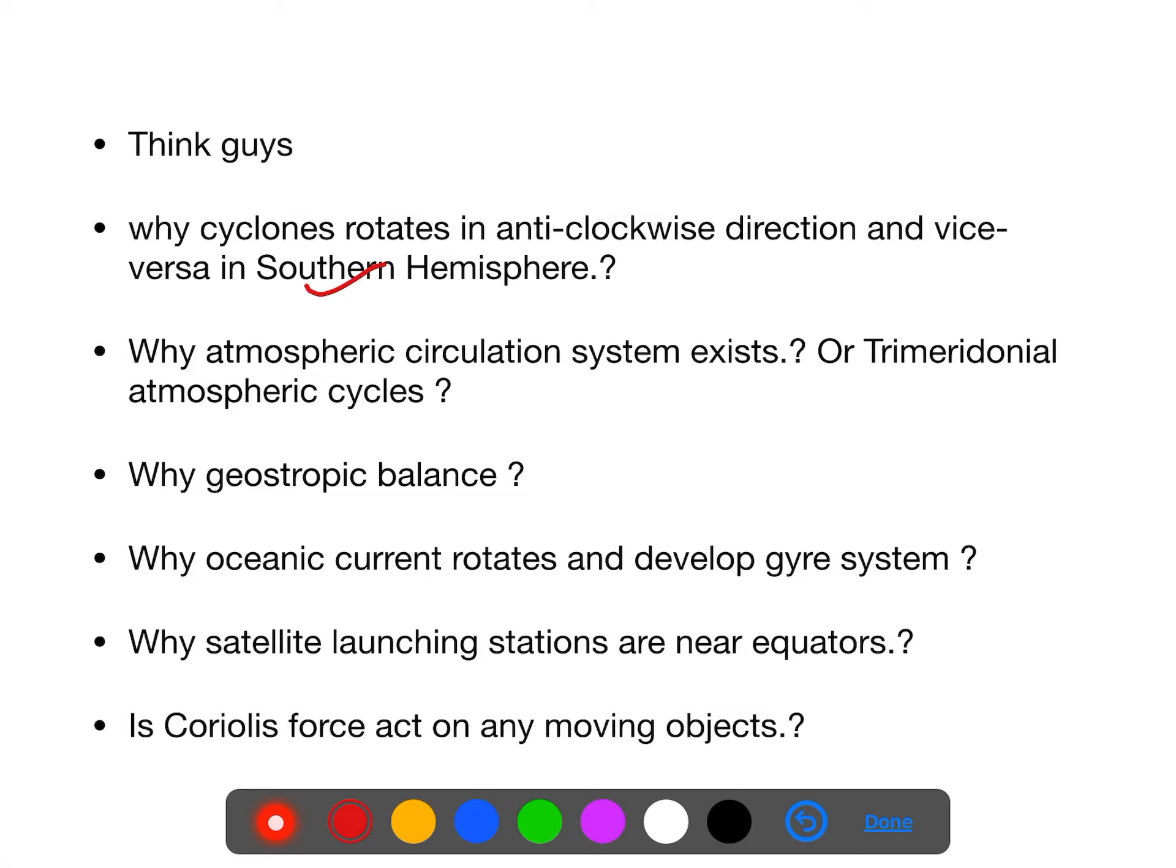Why atmospheric circulation system in general exists in the form of three cells and its concept called tri-meridonial atmospheric cycle which itself consists of Hadley cell, Ferrel cell and the polar cell?